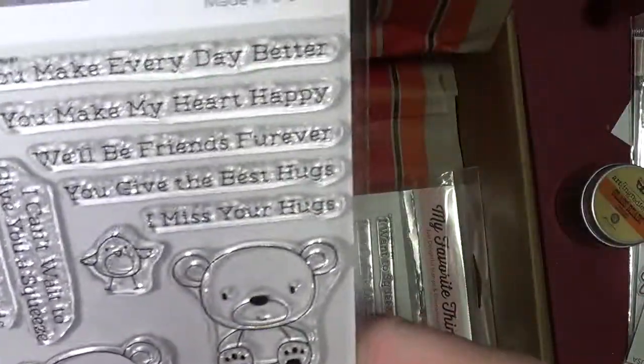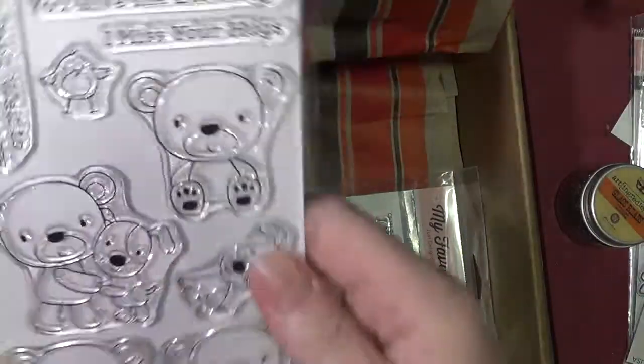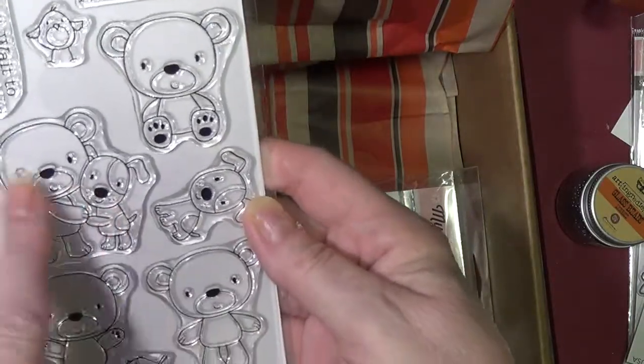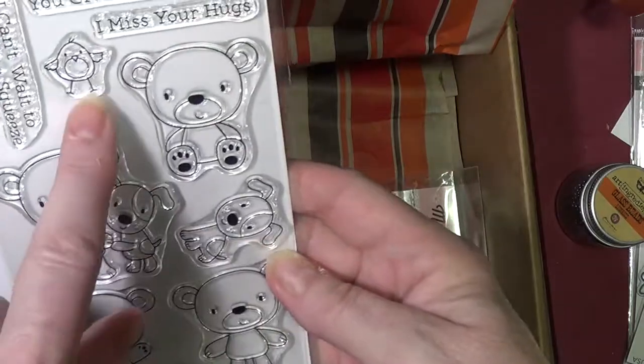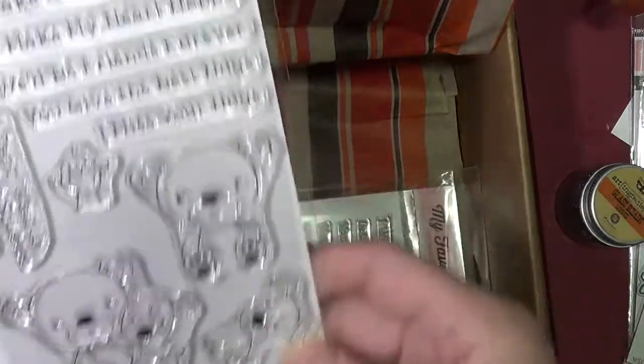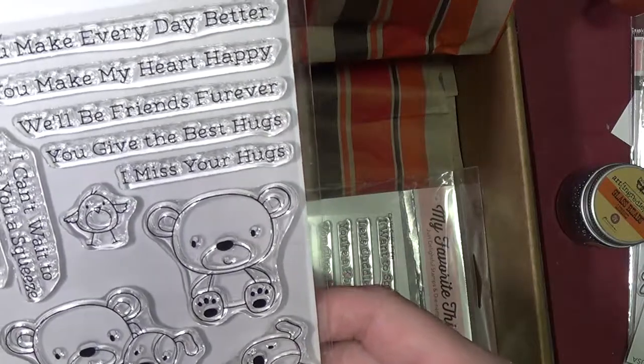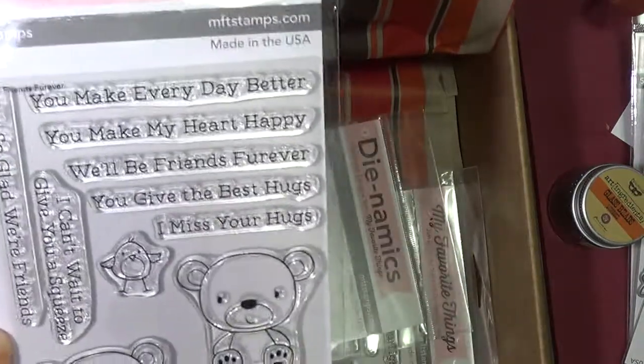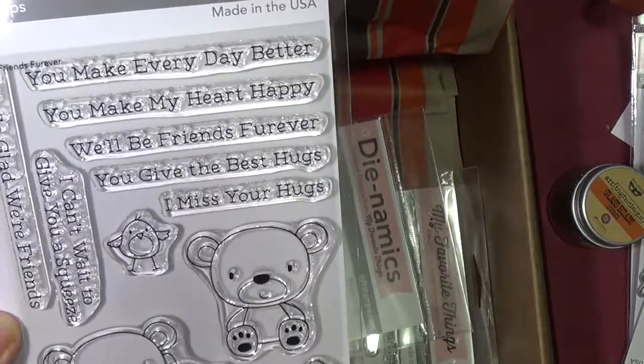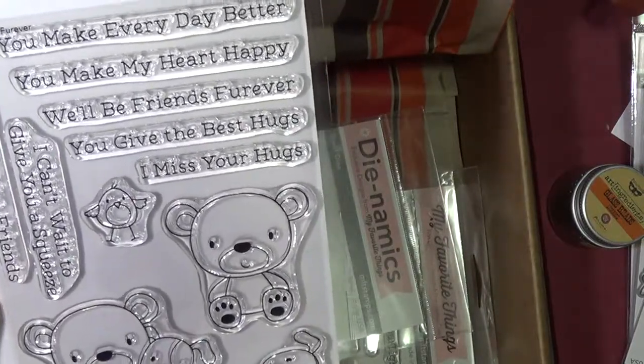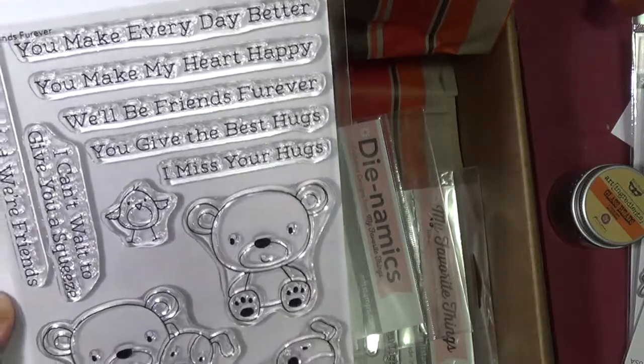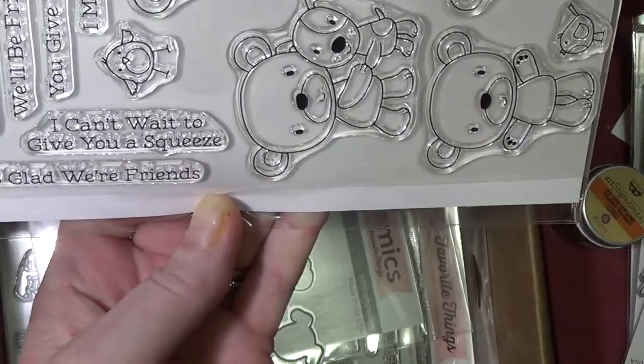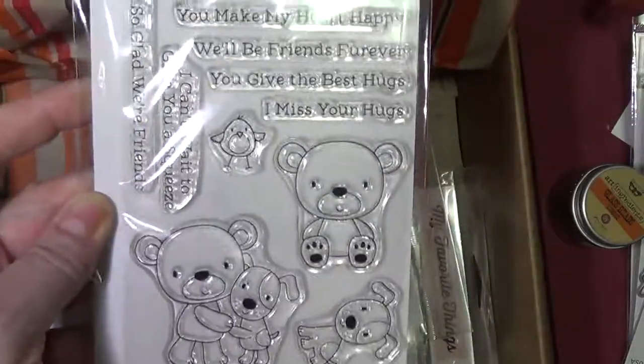And then this is Friends Forever. So we've got these teddy bears and a bird, a teddy bear and a dog. And then we have a bird that has a different stance. You make every day better. You make my heart happy. We'll be friends forever. You give the best hugs. I miss your hugs. I can't wait to give you a squeeze and I'm so glad we're friends. So that's that.